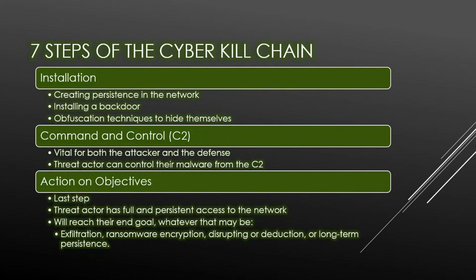Number six is command and control — this stage is exceptionally vital for both the attacker and the defense. This is where the attacker controls their malware from their own keyboard via the C2, also known as command and control. Since malware isn't typically automated, the attacker will have to be the one driving in order to get full access to the network. Finally, number seven: actions on objective. On the last step, the threat actor has full, persistent access to the network and can reach their end goal — whether that's data exfiltration, ransomware encryption, or disrupting or destroying services in the network.